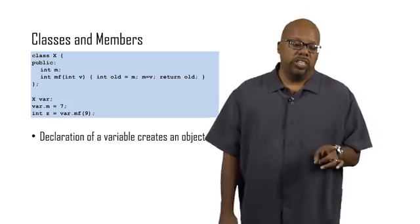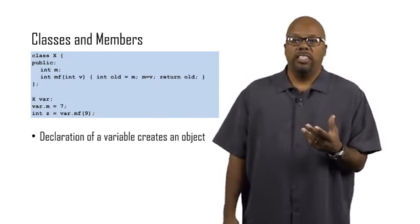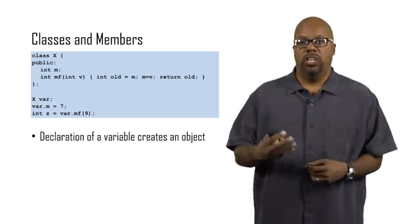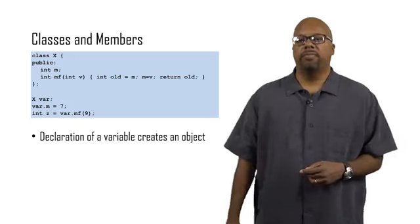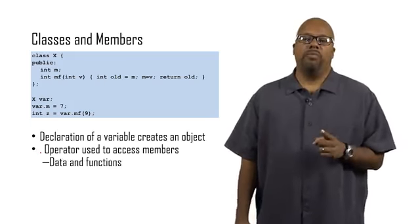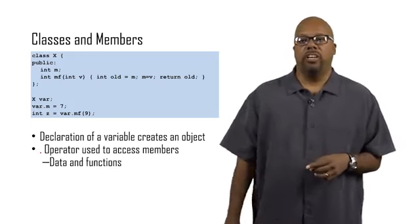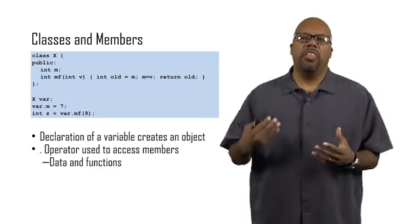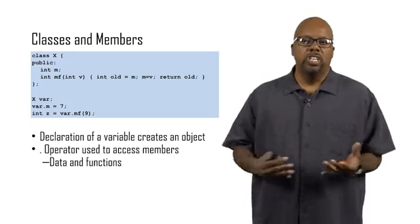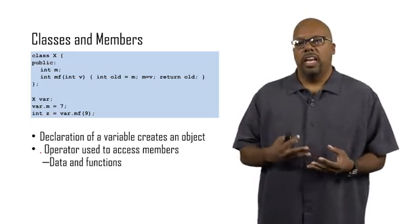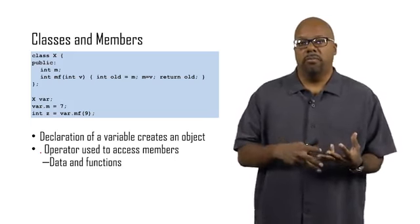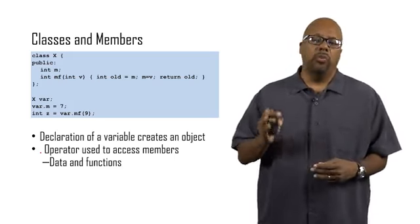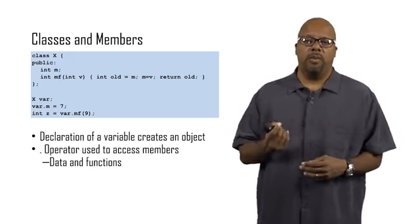So the declaration of the variable creates an object. So when I say X var, it creates an object of that class, and we're calling it var, of that class X. Then the dot operator is very important here. The dot operator is used to access the members. So when you talk about a class and its members, the members are the things that are part of the class. So for instance, in our class, we can say it has two members: m, which is a variable in there, and mf, which is a function in there.